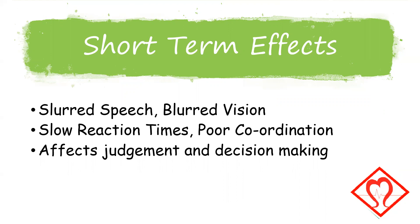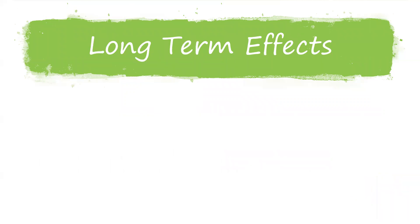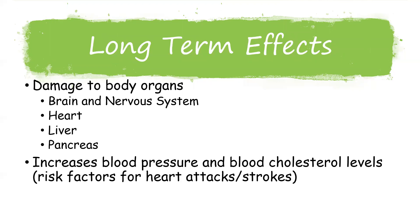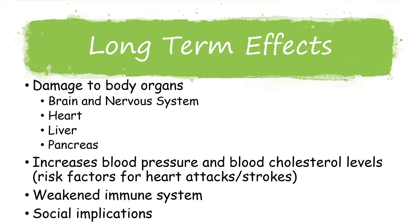Even drinking alcohol to excess over the short term can cause more serious problems with the stomach and liver. Because alcohol is a poison to the body, the more that alcohol is consumed, the more severe the problems. If a person drinks alcohol over the long term and develops a dependence, most body organs can be damaged, including the brain and nervous system, the heart, the liver, and the pancreas. Long-term drinking increases blood pressure and blood cholesterol levels — both risk factors for heart attacks and strokes. It can also cause a weakened immune system, making a person more vulnerable to infections, as well as social implications such as being unable to work or sustain positive relationships.